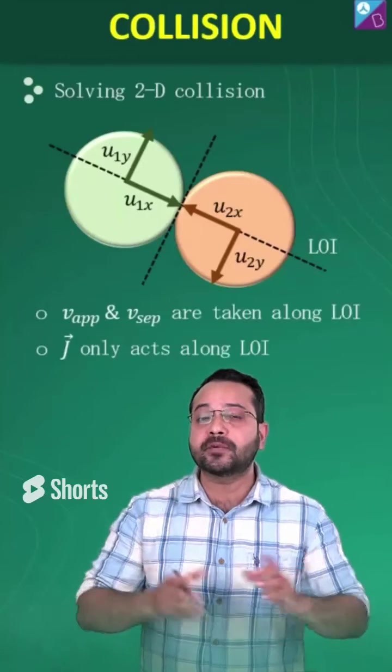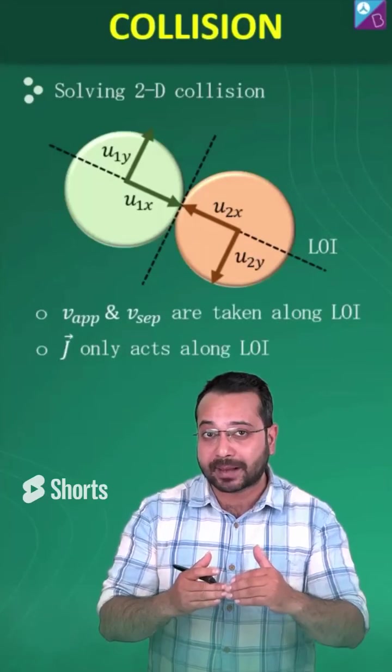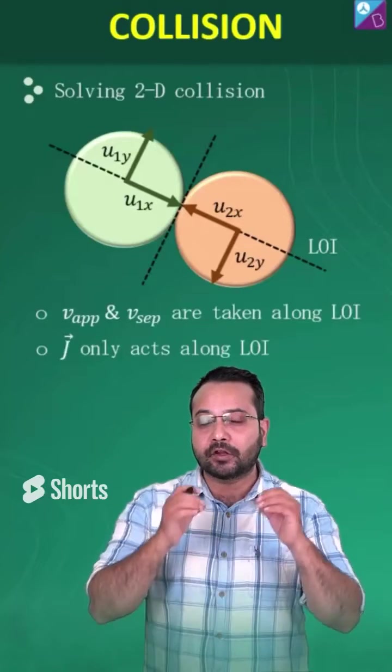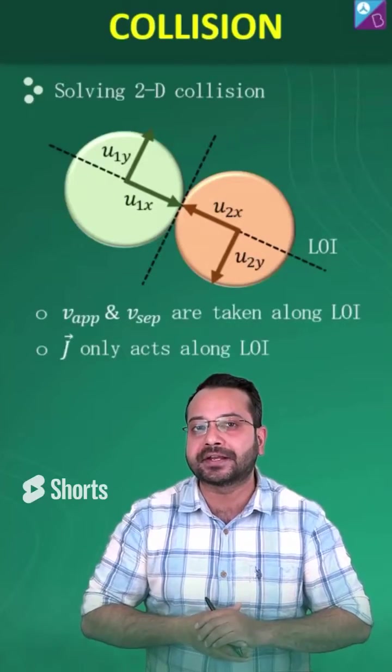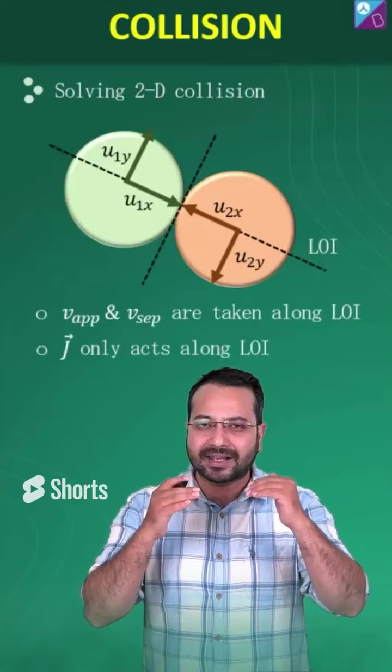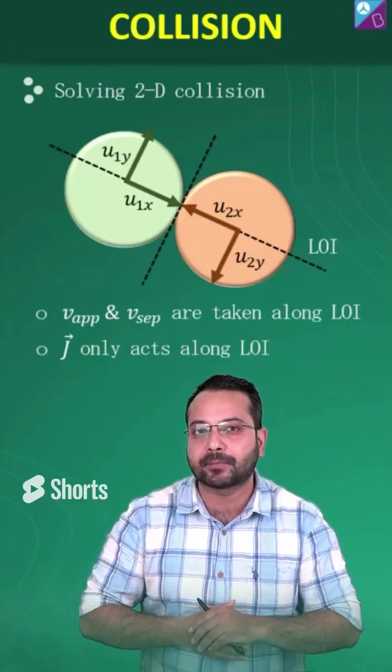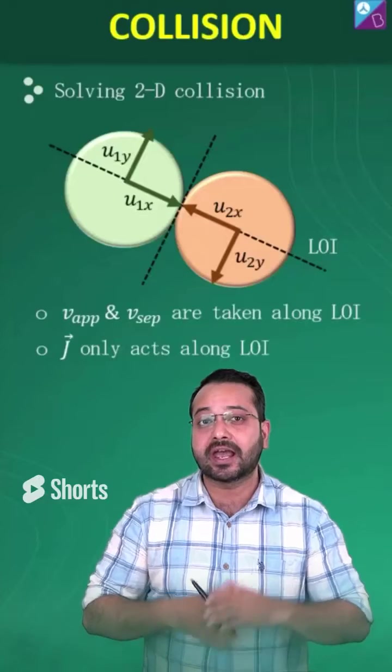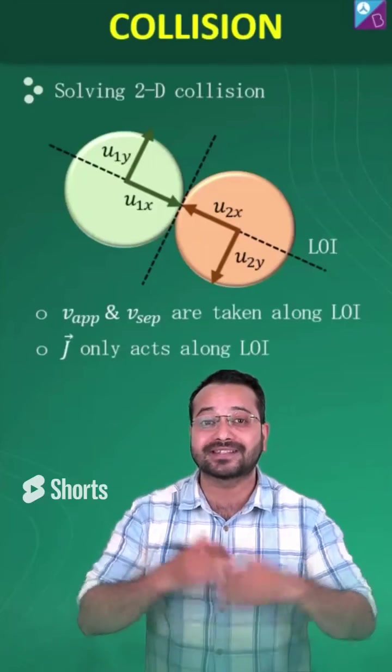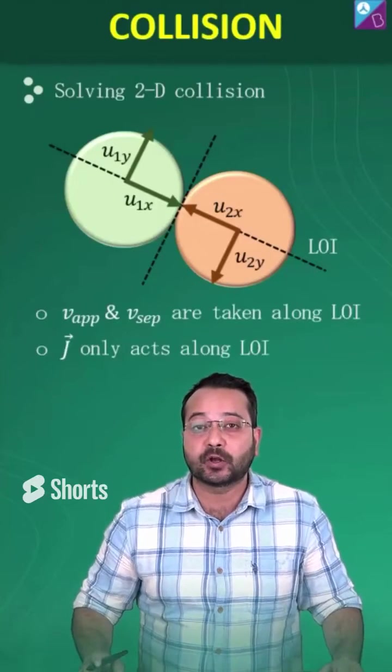Then solving two-dimensional collision: all the velocities are resolved along the line of impact and perpendicular to it. Velocity of approach and separation are calculated only along the line of impact, and the impulse acts only along the line of impact. Hence perpendicular velocities are unchanged and the motion along the line of impact simply becomes one-dimensional collision.